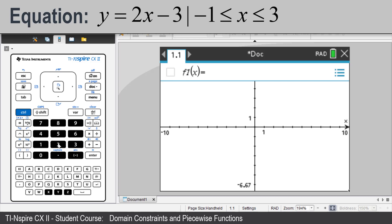Enter 2x minus 3. Then press CTRL equals for the inequalities and conditional template. Select the conditional command, the vertical line. A quick method is to press the left arrow and then press the center of the touchpad.